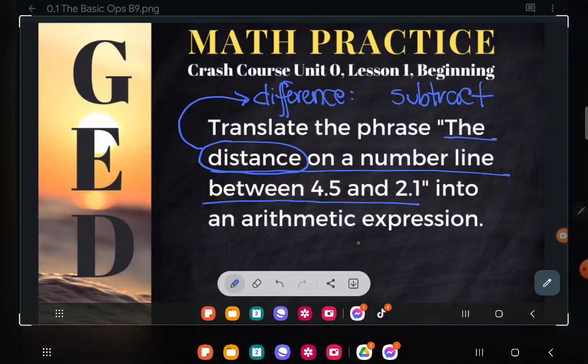And one simple, easy way to do that is just to, when you subtract, make sure the bigger number comes first. So take a look at our two numbers, 4.5 and 2.1. Which one's larger? 4.5 is. And which one's smaller? 2.1 is. And that's probably the easiest way to write this expression.